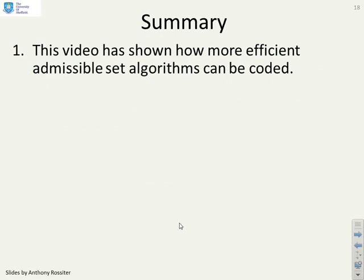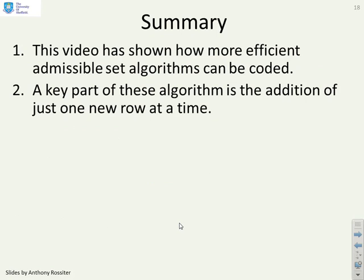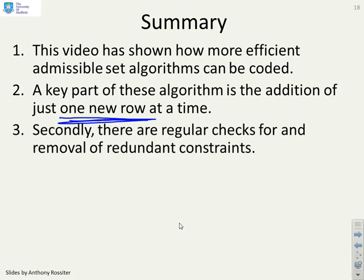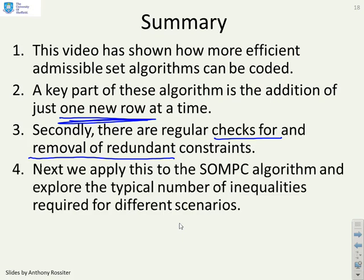Summary. This video has shown how more efficient admissible set algorithms can be coded. A key part of this algorithm is the addition of just one new row at a time. Secondly, there's a need to have regular checks for and removal of redundant constraints so you don't get an explosion in the number of inequalities you're carrying around. In the next video we'll actually apply this to SOMPC or MPC and show you how the three algorithms we've discussed in these videos vary.